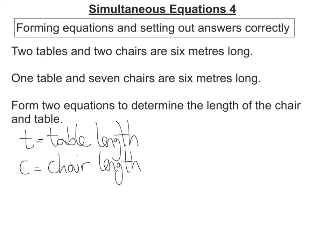Well, two tables and two chairs are 6 metres long. So that's 2T plus 2C is equal to 6. And one table, so that's going to be T plus 7 chairs is equal to 6 metres long. Then I would need to solve that.